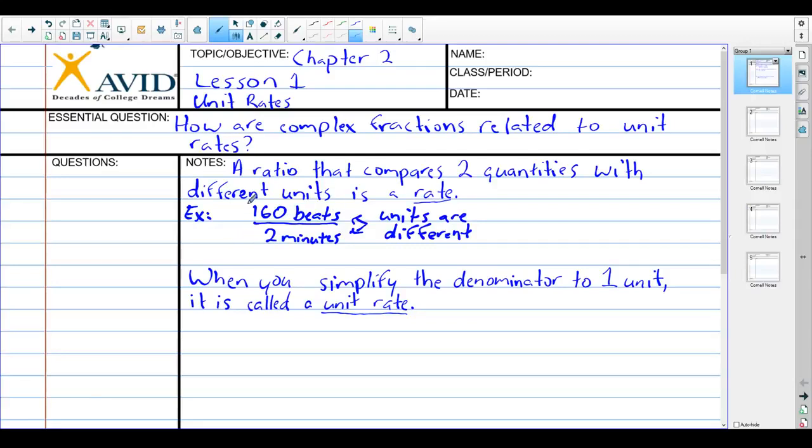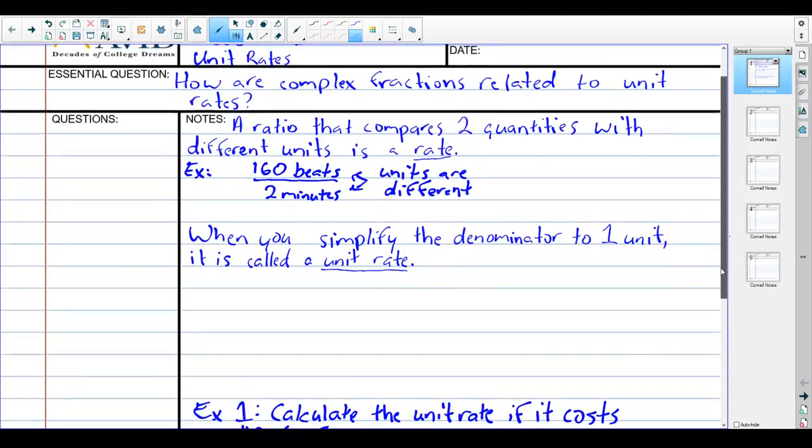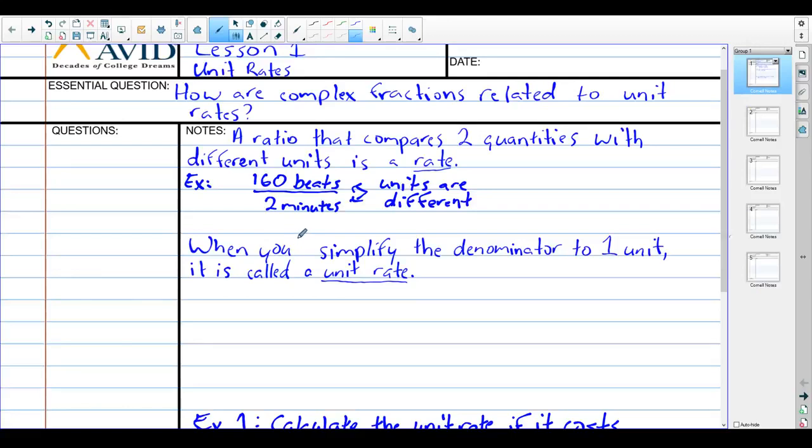Which by itself is not very useful to us. But what we do, the math part of this, is we can simplify so the denominator is just one unit. And then what we have is a unit rate. It's a special type of rate. So what we would need to do, we want one on the bottom. So we're just going to divide. So if we said, what is 160 divided by two, and that gives us 80.